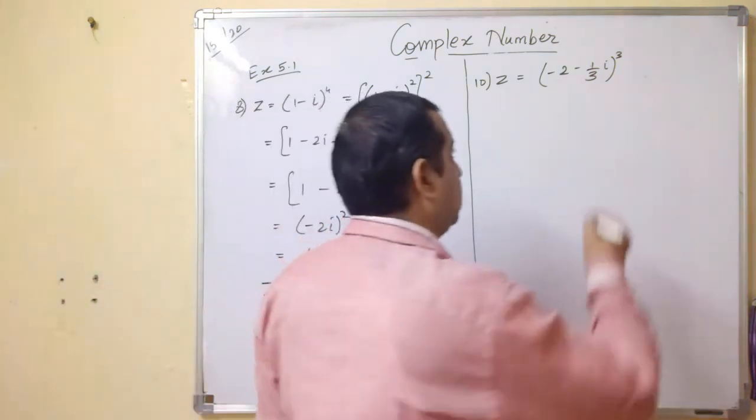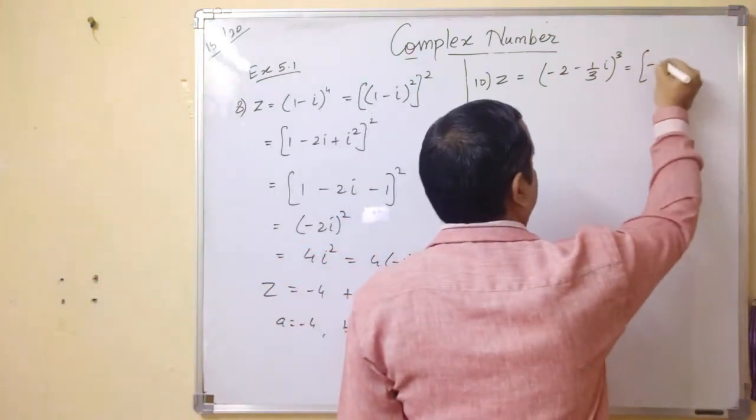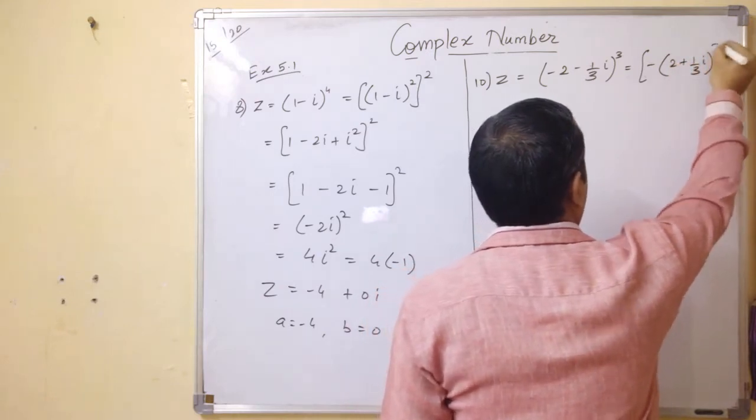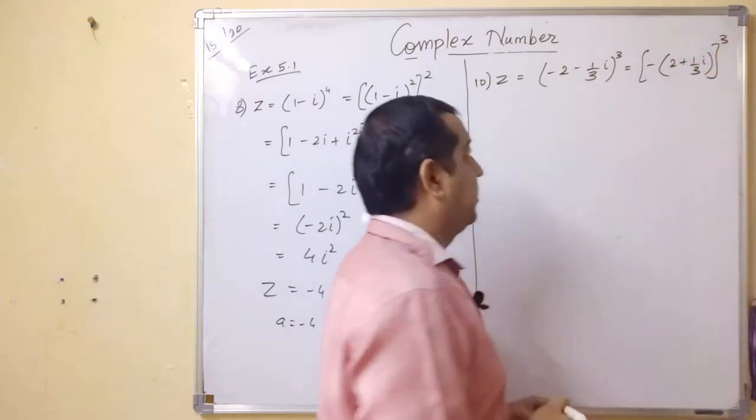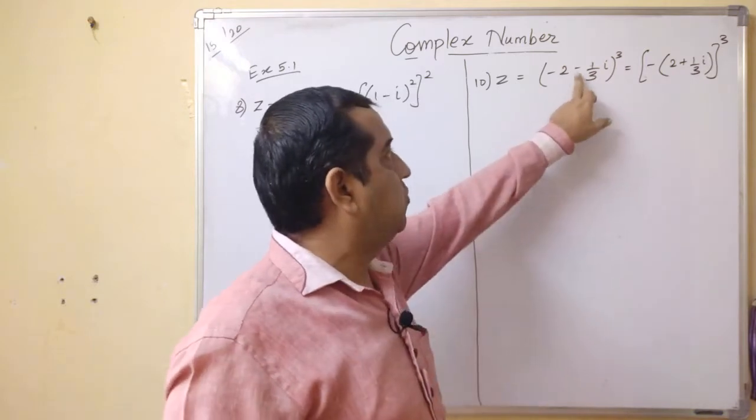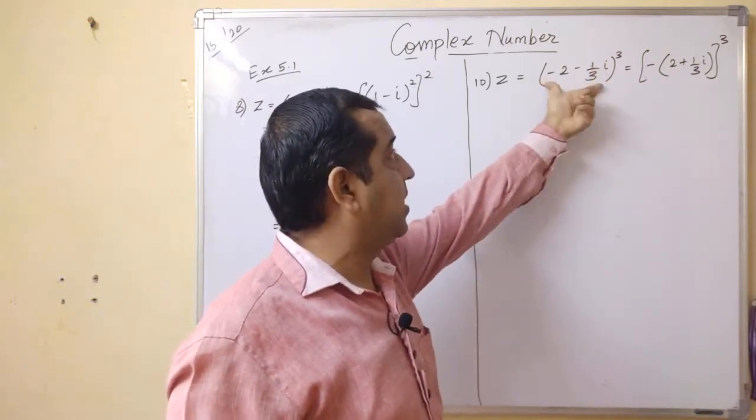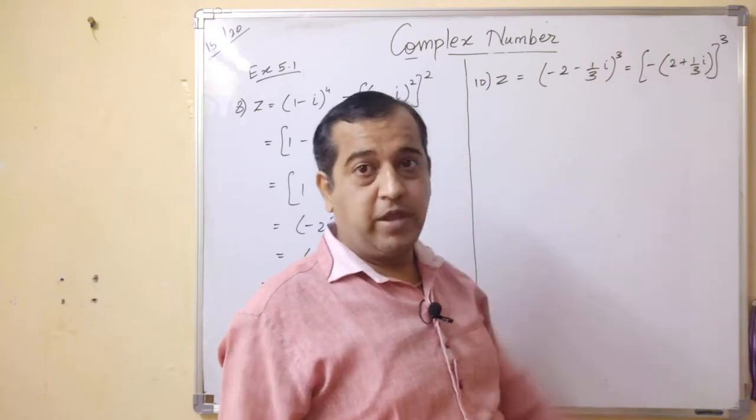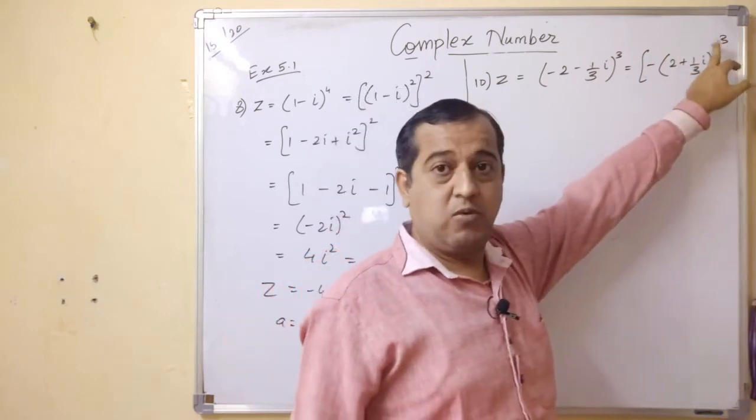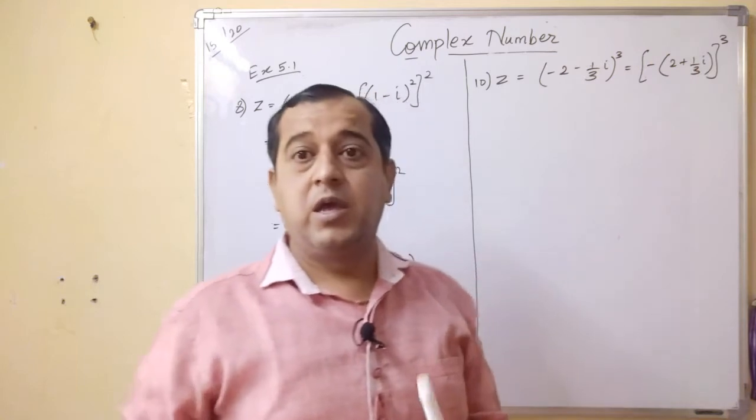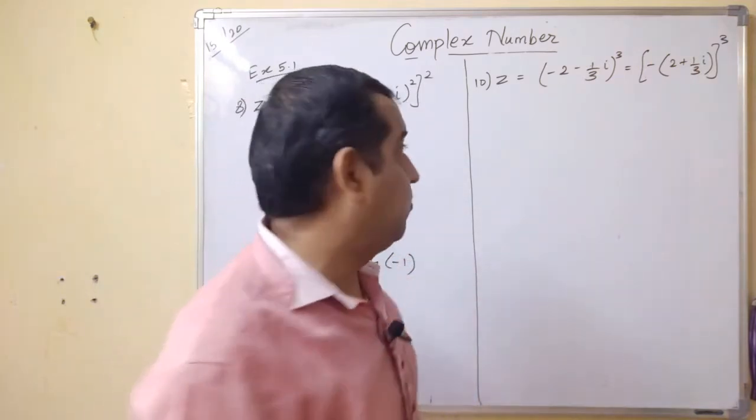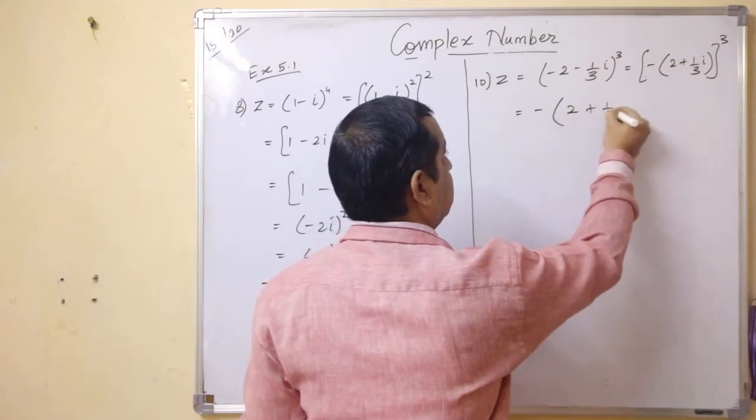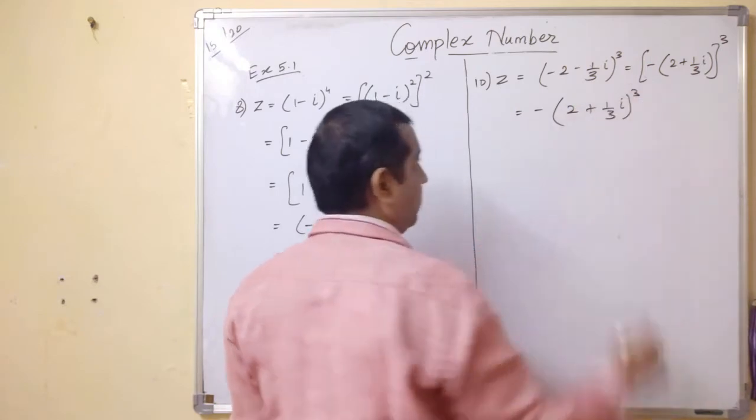Now moving to this. First take out the minus sign as common, you will get 2 plus 1 by 3i bracket cube. See, this is minus 2 minus 1 by 3i, so take minus sign common from both, we get 2 plus 1 by 3i. But the cube is still on the outer bracket, meaning minus is still covered. When you take cube of a negative number, it remains negative, so we get minus 2 plus 1 by 3i bracket cube.